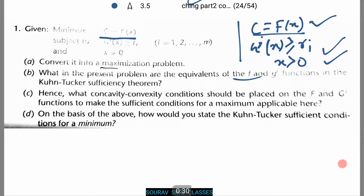Now we need to change it into a maximization problem. How to do that? The process is very simple. Maximize. Now multiply minus 1 to both sides of the objective equation. That is minus c equals to minus fx.